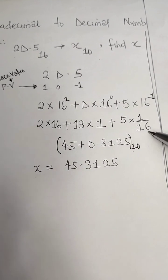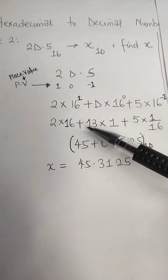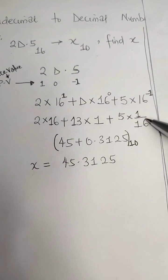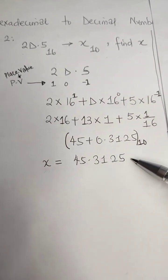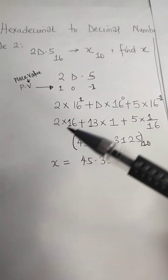So we'll have 2 times 16 plus 13 times 1 plus 5 times 1 over 16. Our sum total will be 45.3125, which represents x.